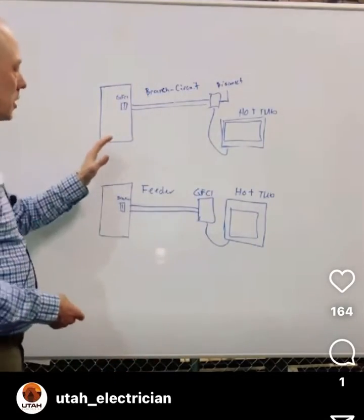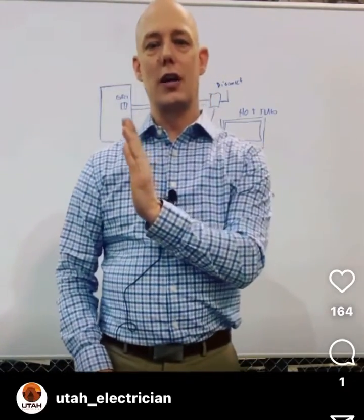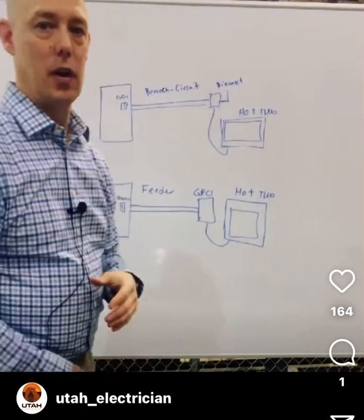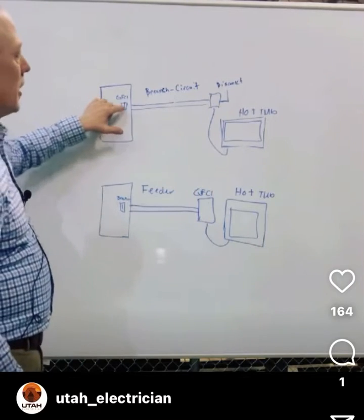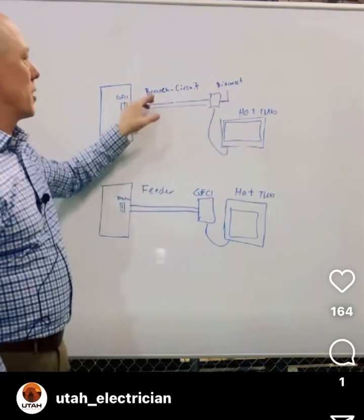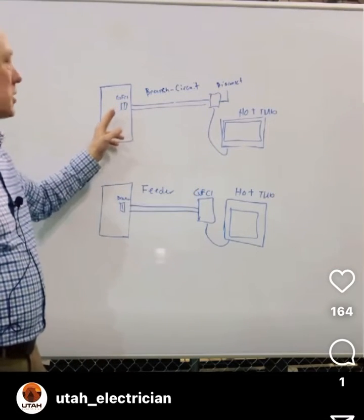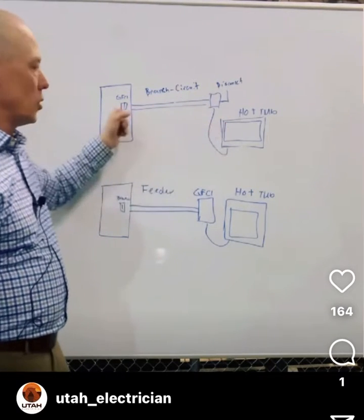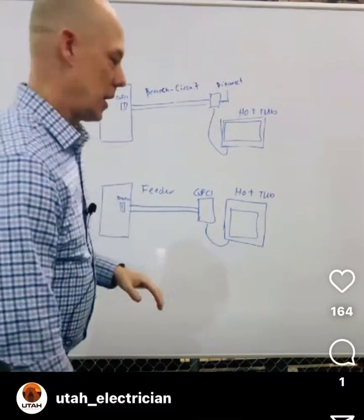So let's look at this one — this is a branch circuit. The definition of a branch circuit is from the last overcurrent protection device to the utilization equipment or the outlet, and I'm paraphrasing that. You see here I've got a GFI breaker, and then it goes to a disconnect, and from there to a hot tub. That makes it a branch circuit because my last overcurrent protection device is here at the sub-panel, so the entire run is on the load side of that overcurrent protection device.